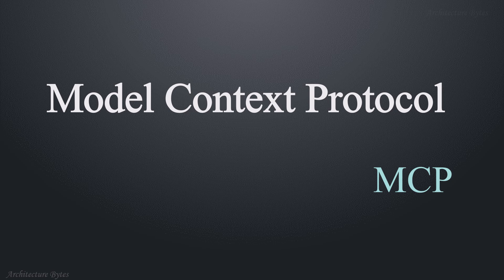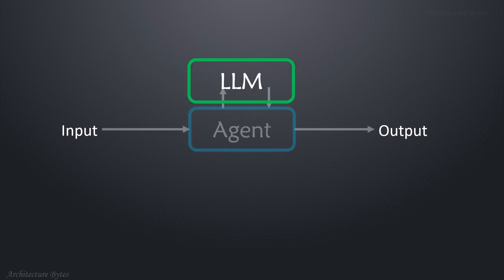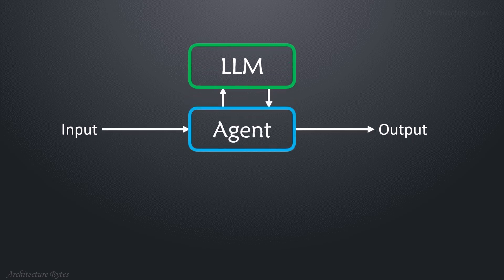Model context protocol. Let's try to understand why we need MCP. Earlier we just had LLMs to which we sent an input and got an output — simple. Then we had agents which act as orchestrators, provide some flow control, and use LLMs for reasoning.